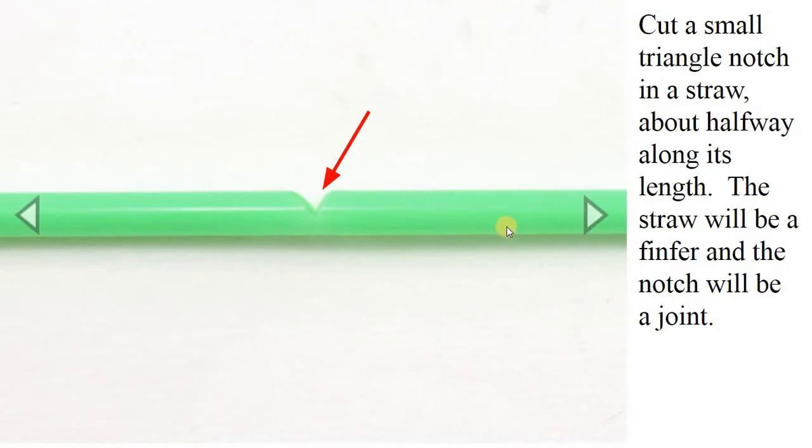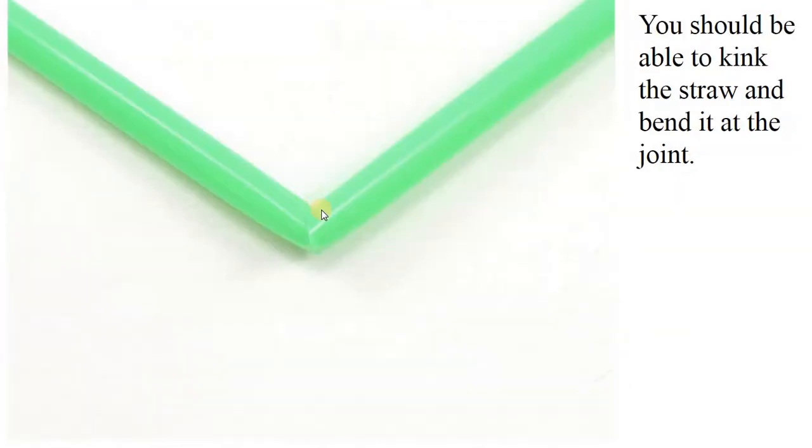So the first thing you do is you get a straw. I'm gonna cut a small notch about halfway along the length of the straw. This is gonna be the finger of the straw and this is gonna be the joint where it bends. The way you cut it is you just grab your scissors, do a little end cut here and then grab the other one, cut here and when you fold it, it should bend like this. And it bends inward towards the joint.